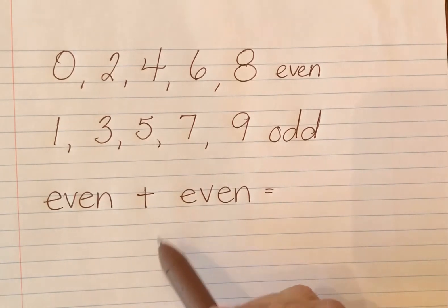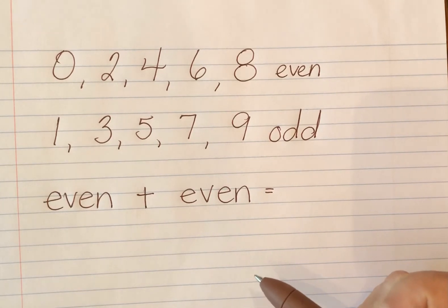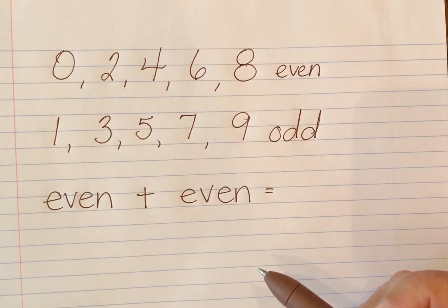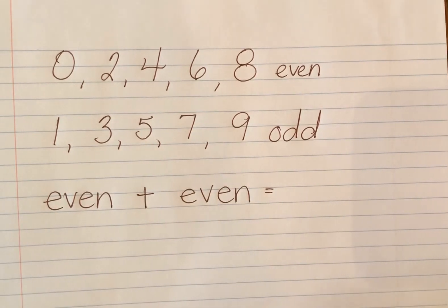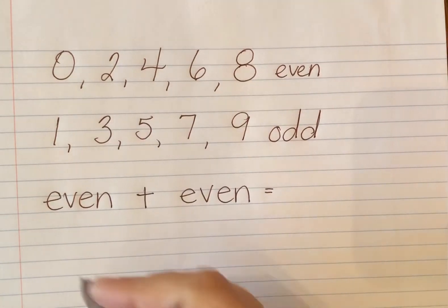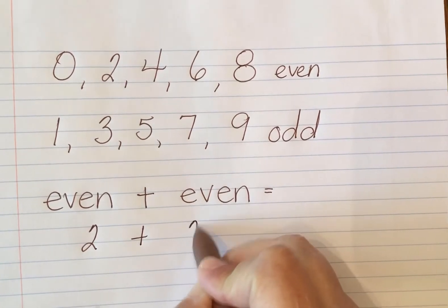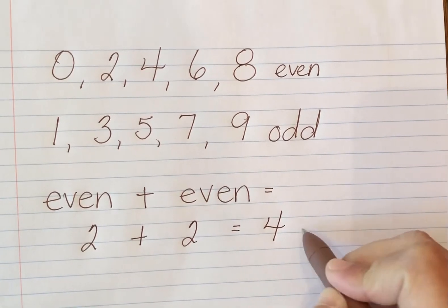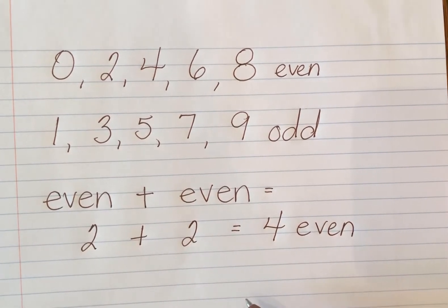Looking at even numbers, I could choose a two, four, six, or eight. I could choose 12 because it has a two in the ones place, or 56 because it has a six in the ones place. But I want to keep it easy, so I'm going to choose two to represent my even number. I'll add another two: two plus two equals four, and four is an even number.